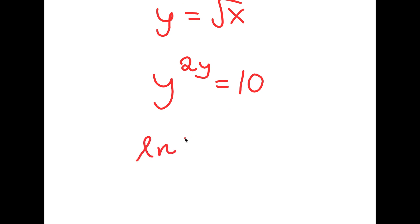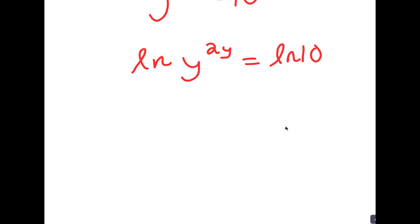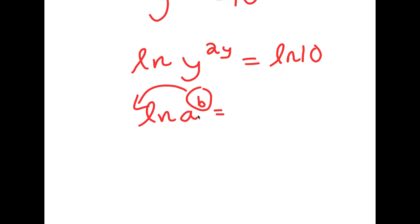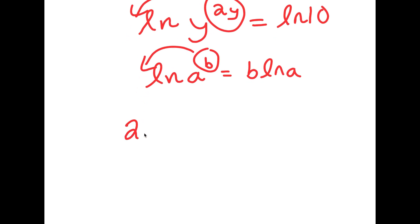Now, I'm going to take the natural log on both sides. So I have ln of y to the power of 2y is equal to ln of 10. If I have something in the form ln of a to the power of b, I can move this exponent b to the front, so it equals b times ln a. In this case, I can move 2y to the front, so I get 2y times ln y is equal to ln 10.